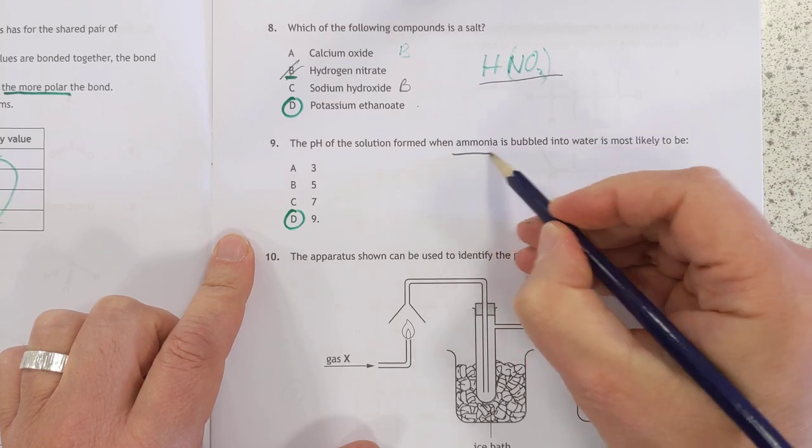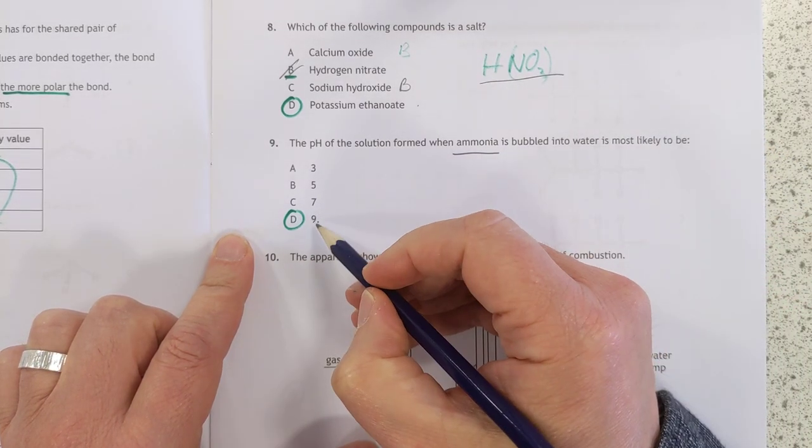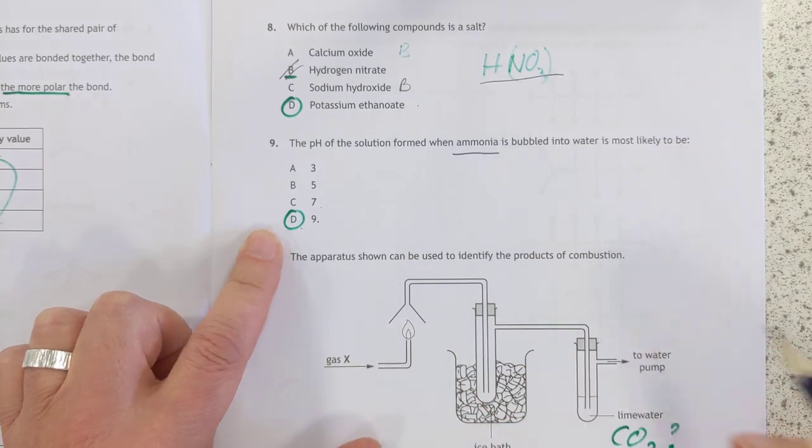Number nine, ammonia is the only gas we know that forms an alkali, so therefore the pH has got to be more than 7, so it's got to be D.